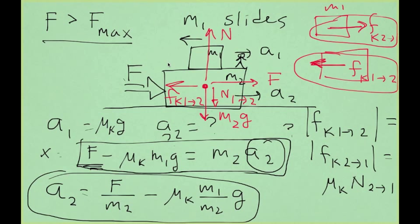Now let's, as usual, we need to check whether this answer makes sense or not. First check would be to see what happens when μ sub k is equal to 0. That means when there is no frictional force between M1 and M2. How should the acceleration of 2 be in that case? Well, if there is no friction between M1 and M2, in the horizontal direction, M2 does not feel the effect of M1.